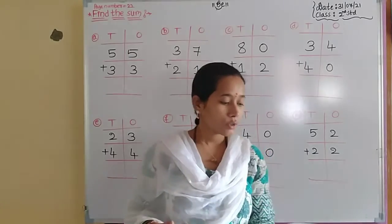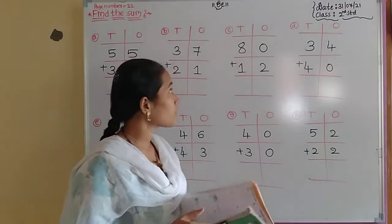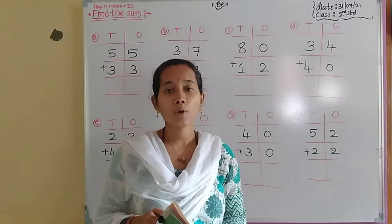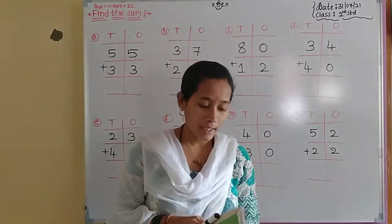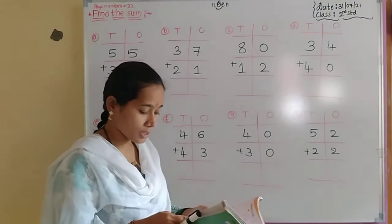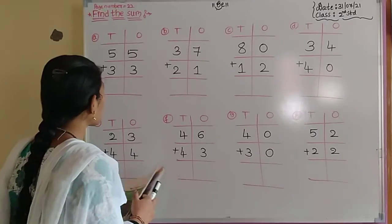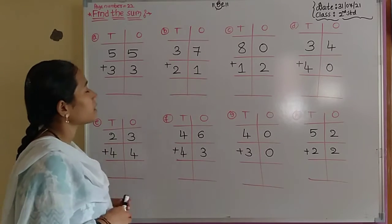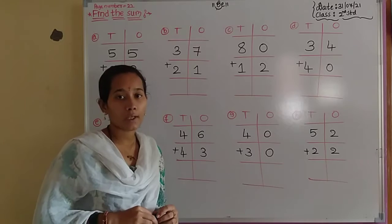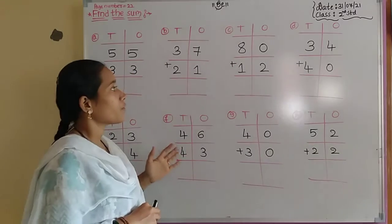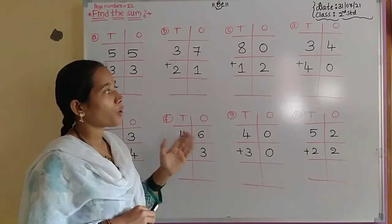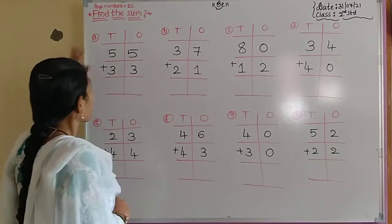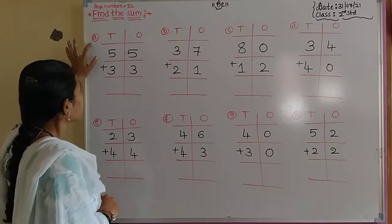In today's class we continue with that topic, with more exercise on that topic. Open your textbook, page number 22. On page 22 they have given some problems about two-digit numbers without regrouping. We have to solve the problems and find the sum for the addition process.